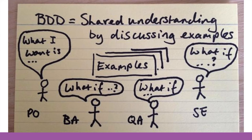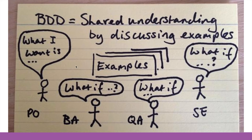This figure presents us with a scenario where you have a product owner, a business analyst, a quality assurance team member, and a software engineer. All the team is joined and collaborating to define examples of the product that is going to be developed. Everyone makes questions and may produce a statement starting with 'what if', 'I want something', or 'what if that happens'. All of this discussion provides a couple of examples that are synonymous with the features that will be available in the software.